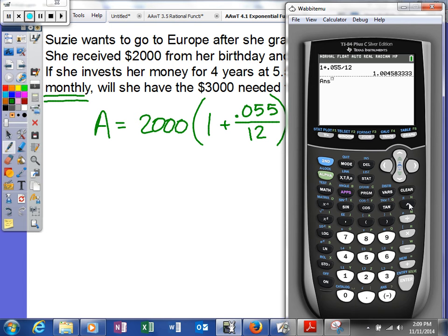And then we're going to raise it to the 12 times 4 power. Now, older operating systems, if you notice, I just hit that caret button and it gave me the answer. It's very important that we do this. Because obviously money, you want to be very specific. So instead of copying down 1.004583 and ending there, your answer will be a little bit off.